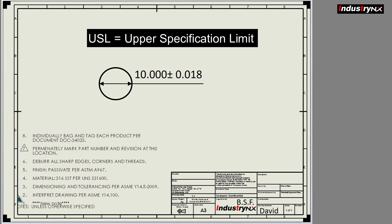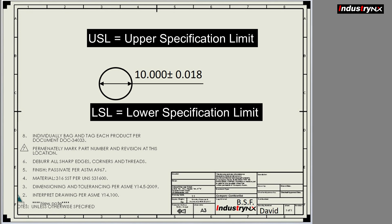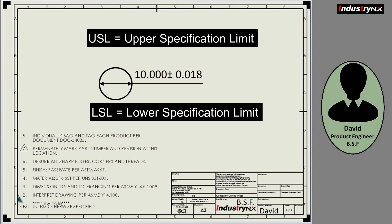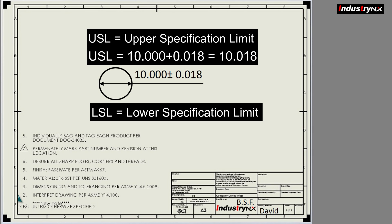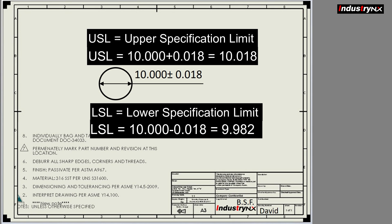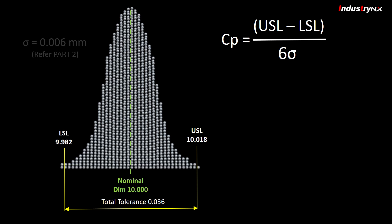USL, that is upper specification limit, and LSL, that is lower specification limit. In our case, our designer David defined USL as 10.018 and LSL as 9.982. We found sigma for 100,000 batch as 0.006.